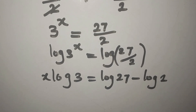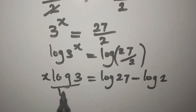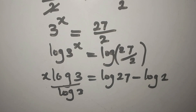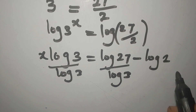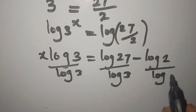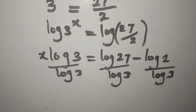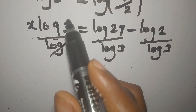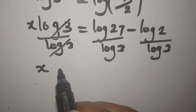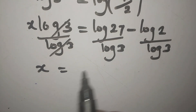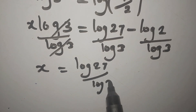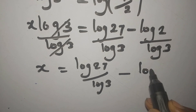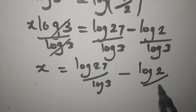Remember that we are looking for the value of x, so we divide both sides by log 3. Dividing this by log 3 gives us x on the left, and on the right we have log 27 divided by log 3, minus log 2 divided by log 3.